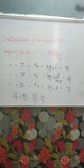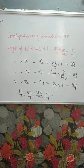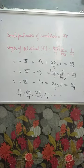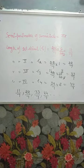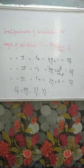Length of first spiral L1 equals pi R equals 22 by 7 into 0.5 equals 5 by 10 equals 11 by 7. Second is 22 by 7, third is 33 by 7, fourth is 44 by 7. This is an AP.